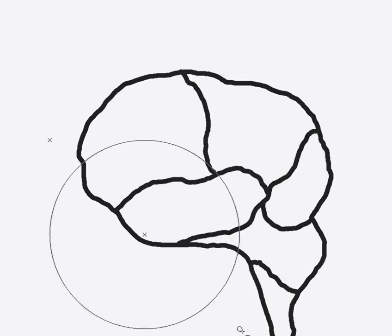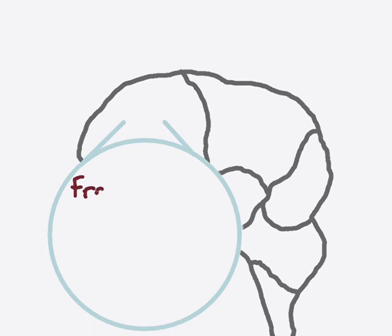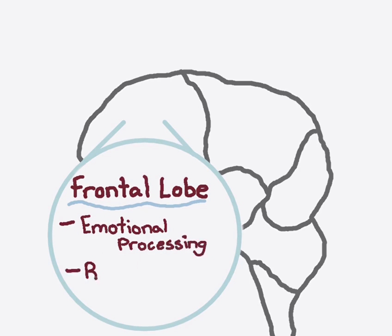As we know now, the frontal lobe where Phineas Gage was hurt is responsible for emotional processing and rational thinking. But at the time, scientists continued to return to this interesting case to learn more about what this lobe does.